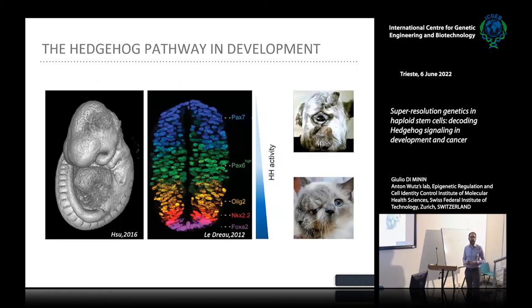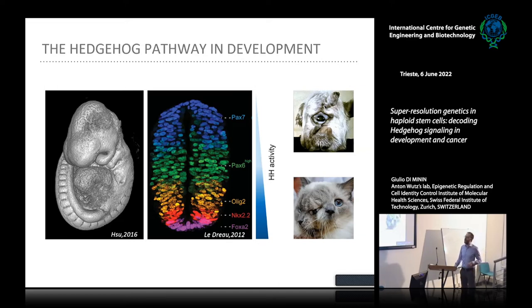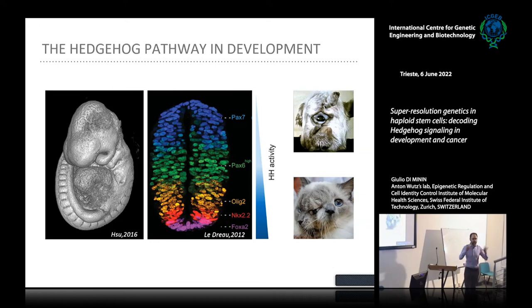The Hedgehog pathway is crucially involved during embryonic development and participates in the formation of many organs. One of the processes where its activity has been best characterized is neural tube specification. At the level of the neural tube, a Hedgehog gradient defines the ventral and dorsal domains. According to this gradient, different neuronal subtypes are specified. Even subtle differences in this gradient lead to severe malformations — for example, cyclopia in cases of reduced Hedgehog, or a cat with two heads (Janus cat) in cases of Hedgehog hyperactivation.